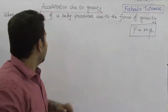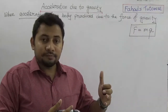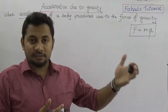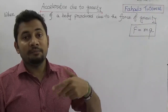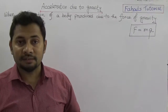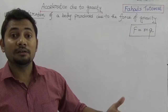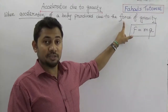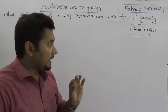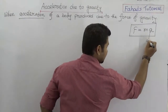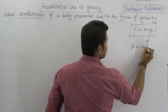From Newton's second law, acceleration is the rate of change of velocity. Acceleration can be positive or negative — both are accelerations. When acceleration is produced due to the force of gravity, it is called the acceleration due to gravity. This is expressed by small g, and then we can write F = mg.